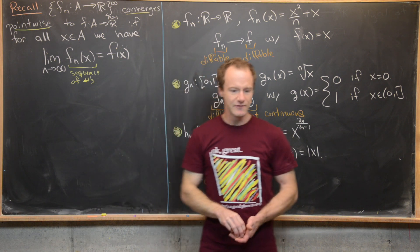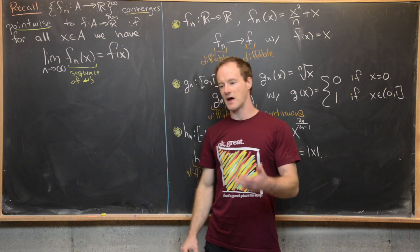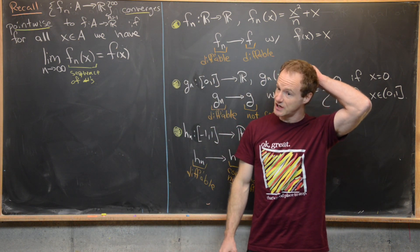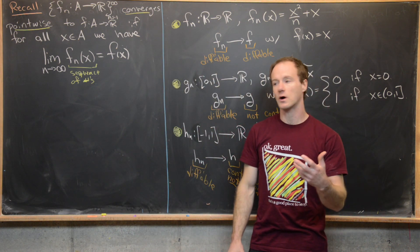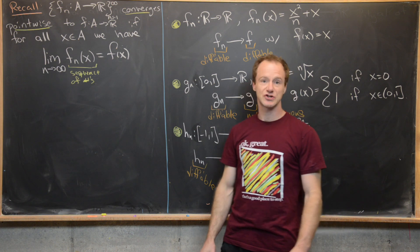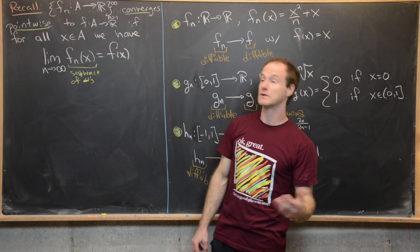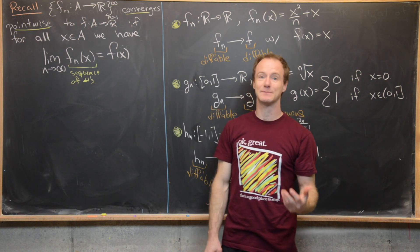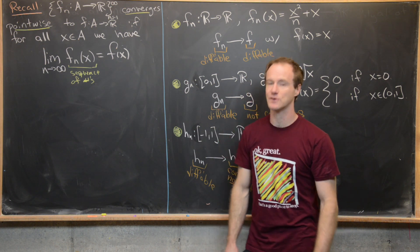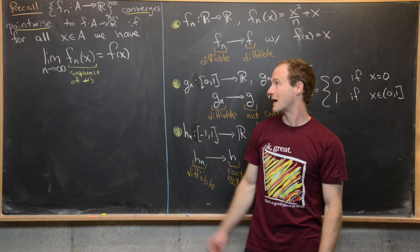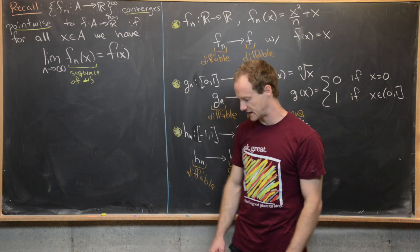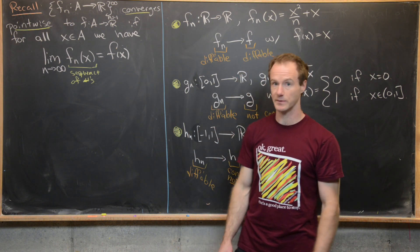If you think about the epsilon-N definition for the convergence of a sequence of numbers, that N is going to depend on epsilon and possibly also on x — we'll get to that in a little bit.